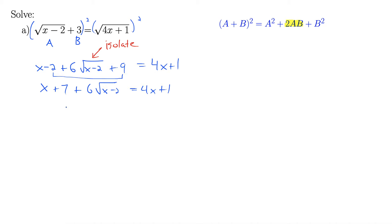I want to get this 6 radical x minus 2 by itself, so I'm going to subtract x from both sides and subtract 7 from both sides. This gives 6 radical x minus 2 equals 3x minus 6. We're still trying to get rid of that square root there, so we square both sides again to get rid of the square root.